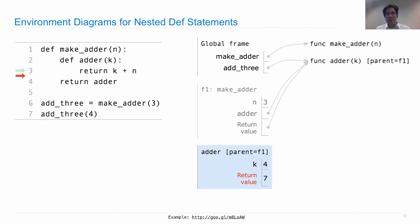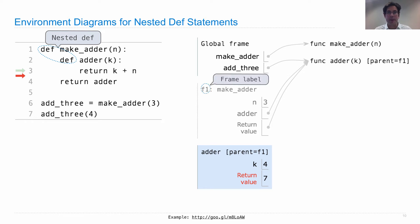Let's look even deeper at this. Here's the picture I just showed you — I'll explain each new part so you understand exactly what's going on. We have a nested def statement — that's new; we've never looked at an environment diagram for that before. We have a frame label, which shows up when we need to refer to a particular frame as the parent of some function. And we have an annotation on a function indicating it has a parent. So what is a function? A function is a block of code and the environment in which that function was defined.